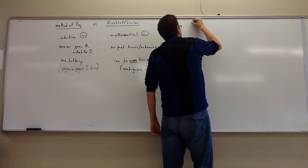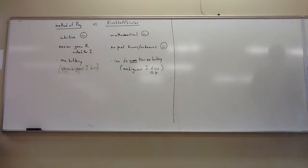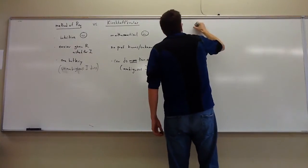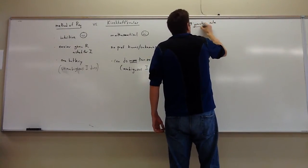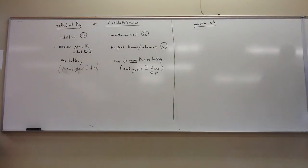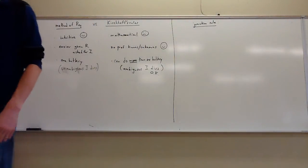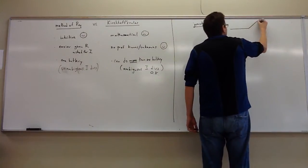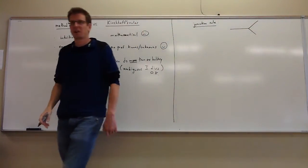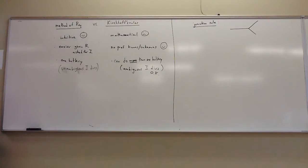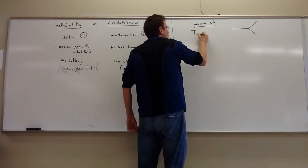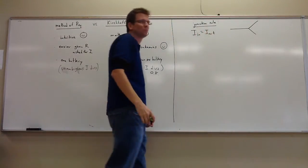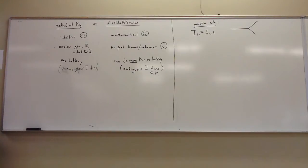Both of Kirchhoff's rules are things we kind of already know — we're just naming or repackaging them. The first rule is the junction rule. A junction is a fork in the circuit where charge flows in and some goes one direction, some goes another. The junction rule simply says what goes in must come out — for example, I1 equals I2 plus I3.